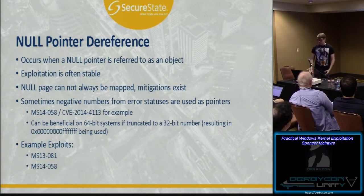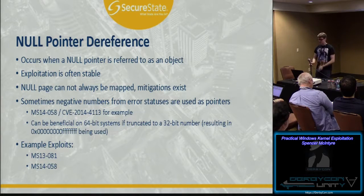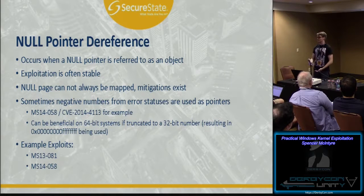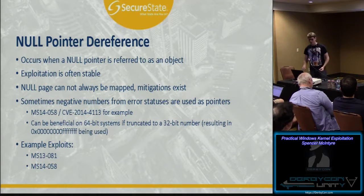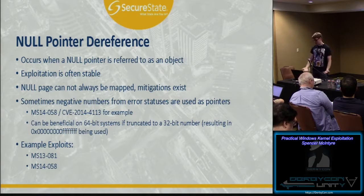Sometimes the null page cannot always be mapped — there's a mitigation for that called null page mapping. EMET includes that, and on 64-bit Windows systems by default it's always on: you can't allocate those lower pages. One interesting thing though is that sometimes, as seen in MS14-58, a pointer can be truncated. On a 32-bit system negative-1 was being used, but on a 64-bit system it was 0x000ff. That address is much higher in user-controlled memory space, so an exploit for 64-bit was possible because it's outside the boundaries of Windows protection.